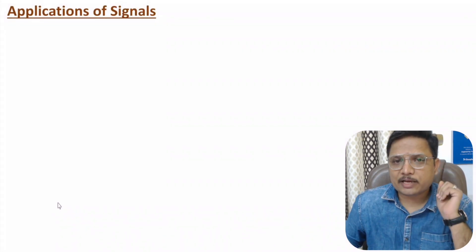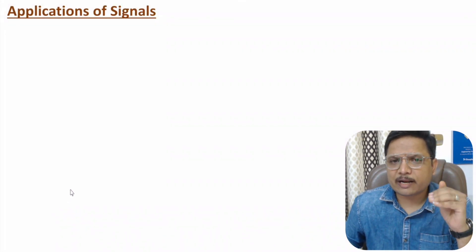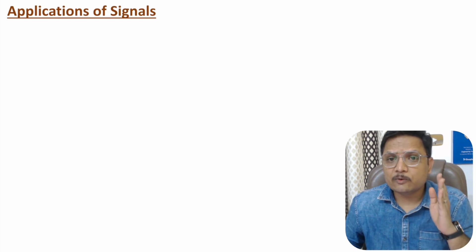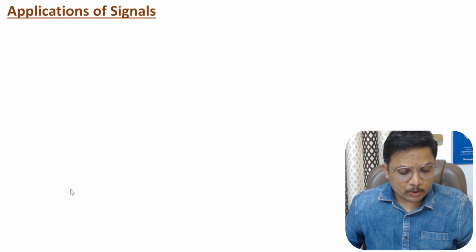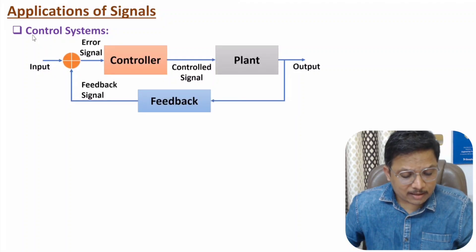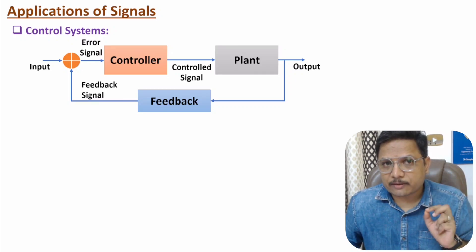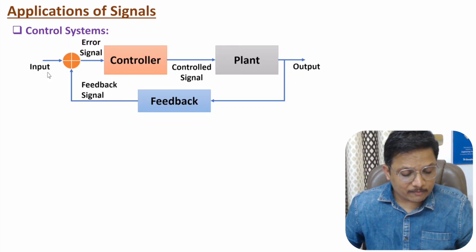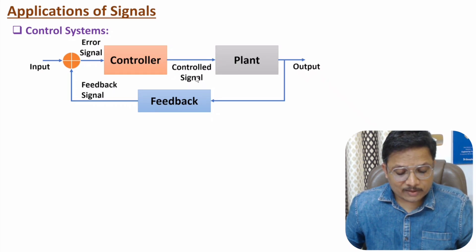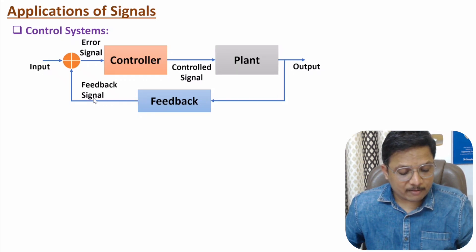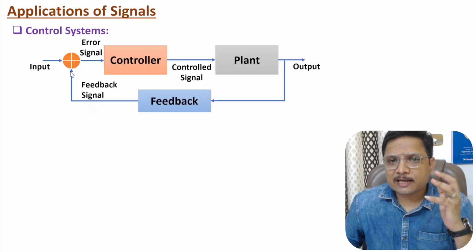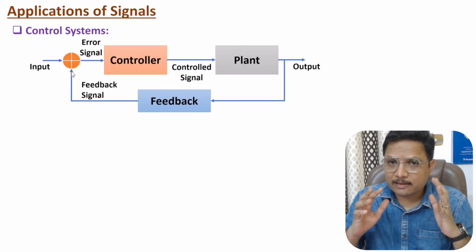Now I will discuss applications of signals. There are many applications in different branches of engineering. The first application is in control systems, where we use signals to transfer information. We have an input signal given to the system, an error signal given to the controller, the controller generates a controlled signal given to the plant, and we have an output signal fed back as a feedback signal. Different signals are processed inside the system.